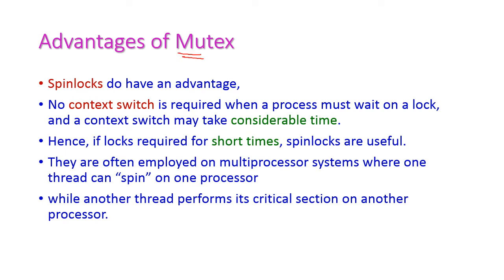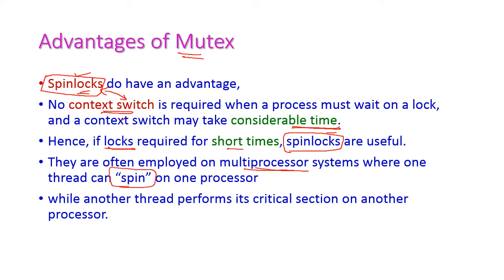The spin lock itself is actually an advantage of mutex locks. Without spin lock, we would have to use a context switch, which is more complicated and consumes more CPU time. If the lock is required for a very short time, spin locks are very useful. In a multiprocessor system, one thread can spin on one processor while another thread performs the critical section on another processor. Therefore, spin lock is an advantage of mutex locks.